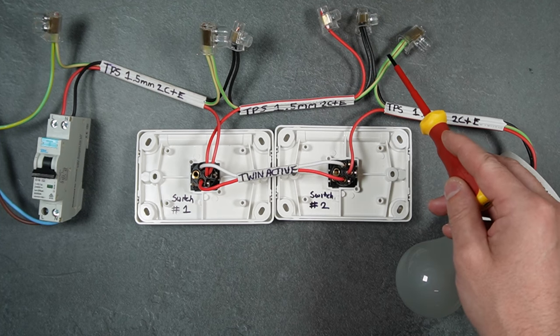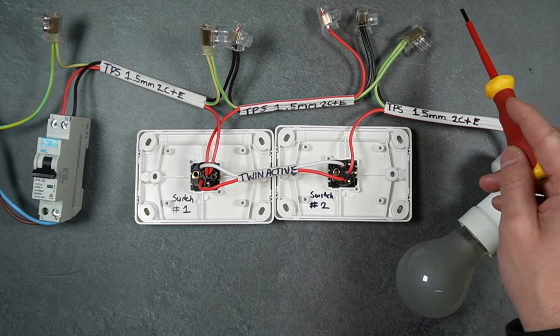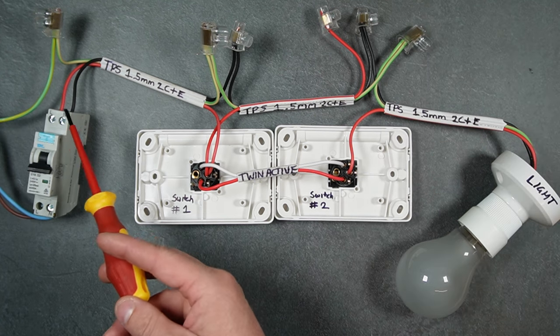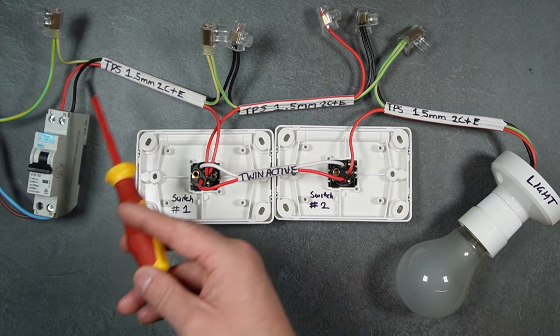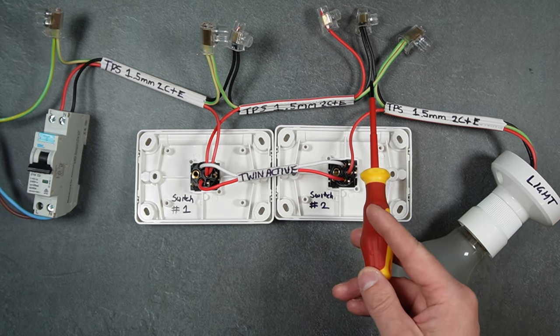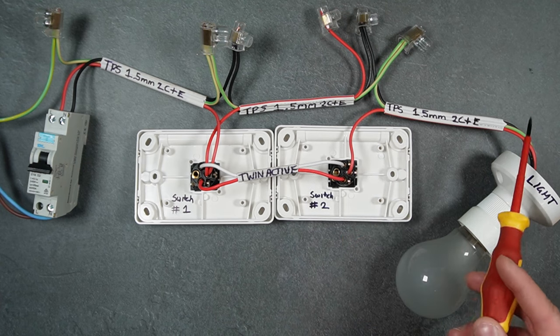The neutral and earth from the switchboard just come to each switch and daisy chain, and then from the corresponding switch up to the light.